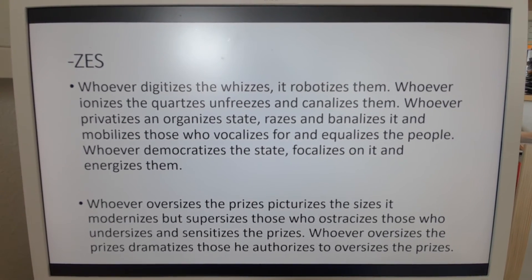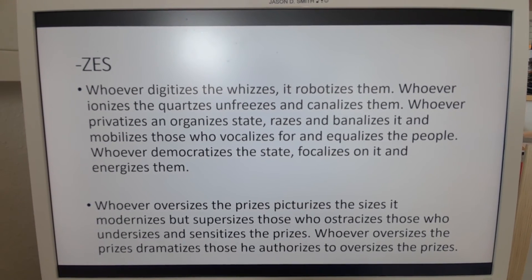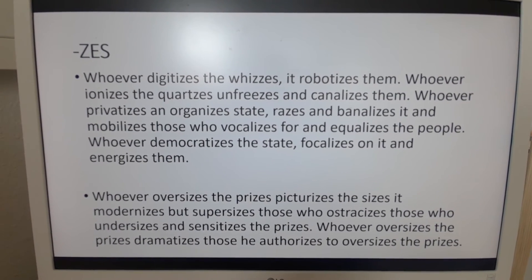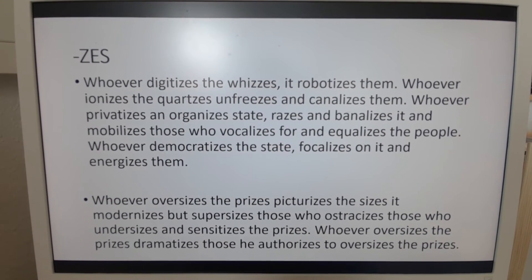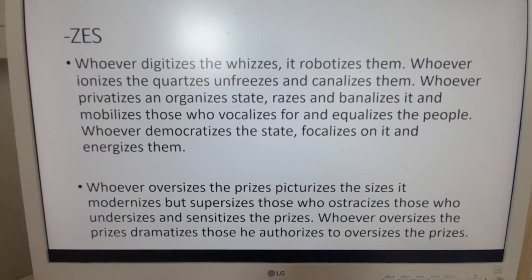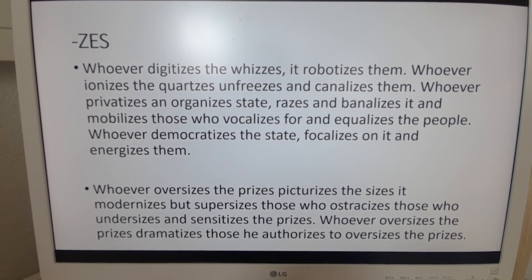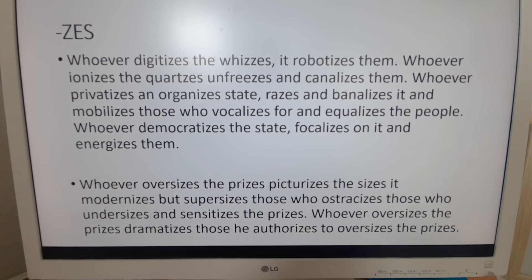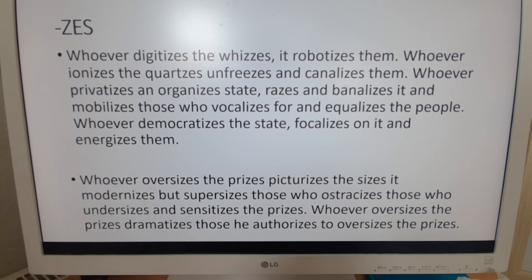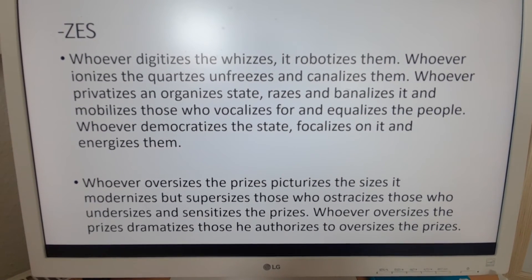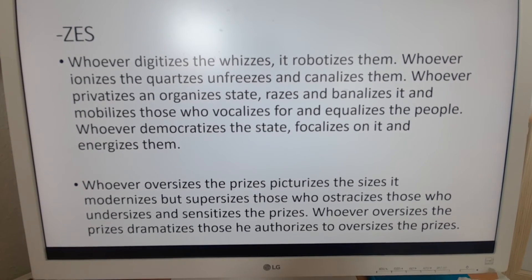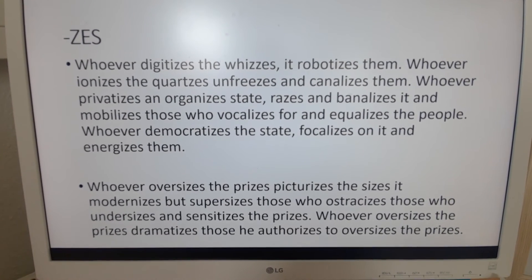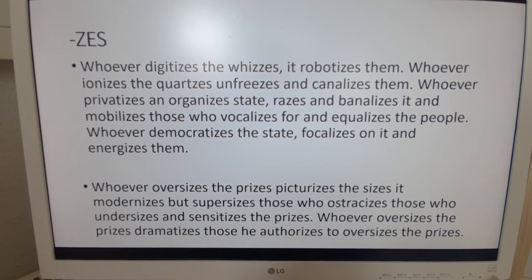Next set — we have two with Z-E-S. How you decide what to use for tongue twisters depends on you as a student or as a teacher. Top half: Whoever digitizes the wizards and robotizes them, whoever ionizes and quartzes, unfreezes, and canalizes them, whoever privatizes and organizes the state, raises and banalizes it, and mobilizes those who vocalizes for and equalizes the people, whoever democratizes the state, vocalizes on it, and energizes them. Bottom half: Whoever oversizes the prizes, picturizes the sizes, it modernizes, but supersizes those who ostracize those who undersizes and sensitizes the prizes. Whoever oversizes the prizes, dramatizes those he authorizes to oversize the prizes.